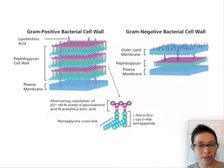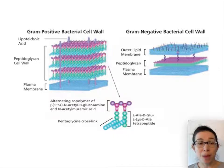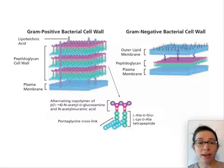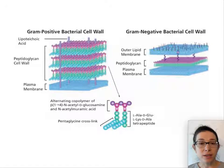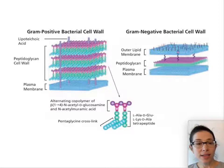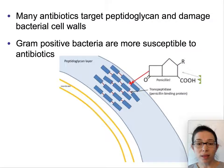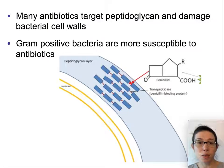Here is another cartoon demonstrating the same thing. On the left, we have gram-positive bacteria with a much thicker peptidoglycan cell wall retaining the dye. Gram-negative bacteria have a much thinner peptidoglycan cell wall. This has important implications for how we treat these bacteria with antibiotics. A lot of antibiotics target the peptidoglycan cell wall and kill bacteria by damaging it.